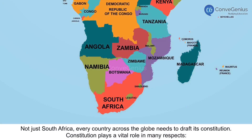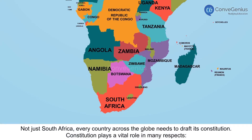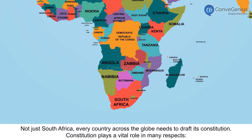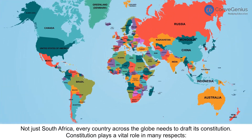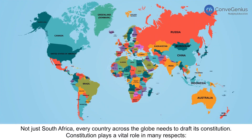The set of basic rules that determines the power of the elected government and ensures fundamental rights to the citizens is called a constitution. Not just South Africa, every country across the globe needs to draft its constitution.